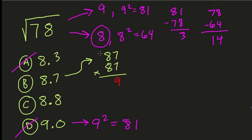7 times 7 is 49. 7 times 8 is 56, plus 4 is 60. Carry the 0. 8 times 7, again, 56. 8 times 8 is 64, plus 5, 69. Add these up. 9, 6, 5, 1.